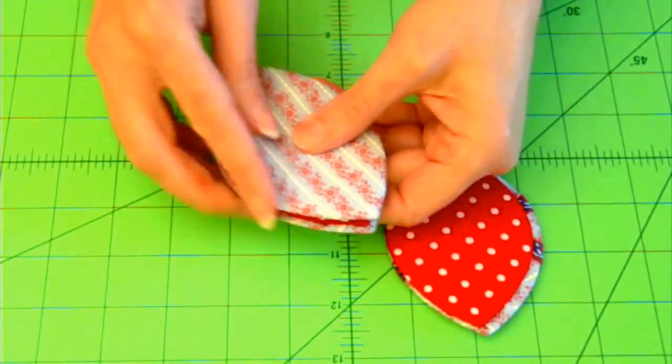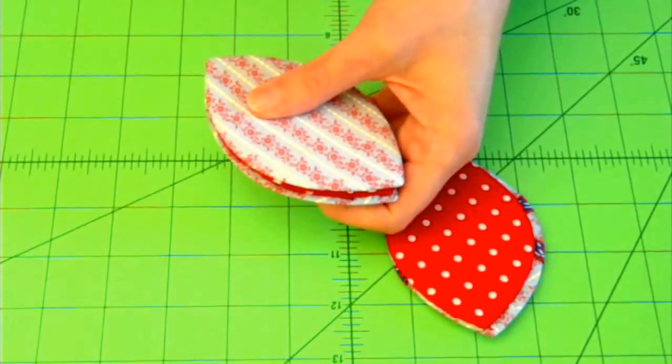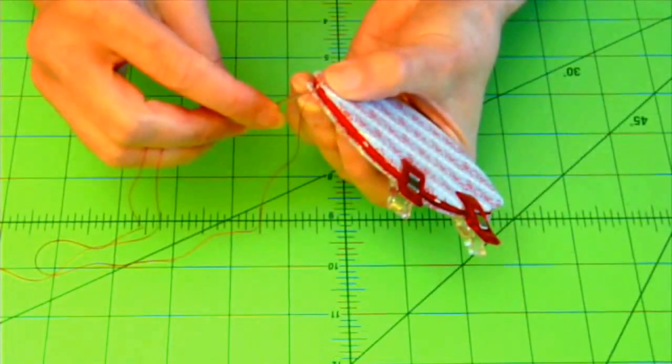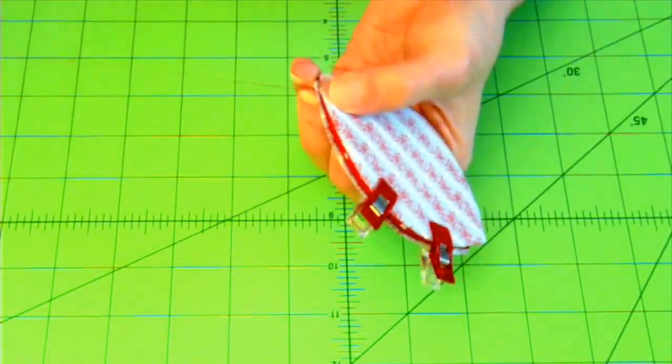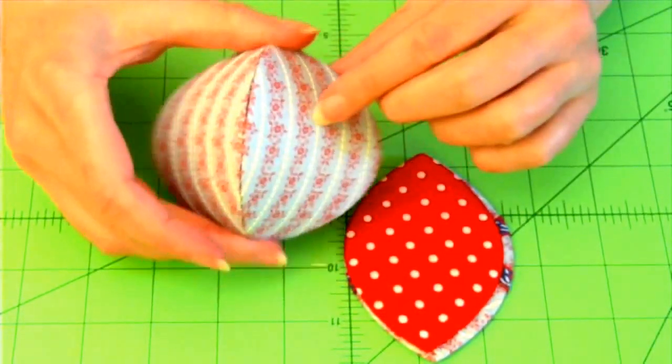And of course the edge I want to line them up against is the bottom edge. So I'm going to start here. I'm going to sew my way around this bottom edge. With these two pieces sewn together, now it's time to add the other side to our case.